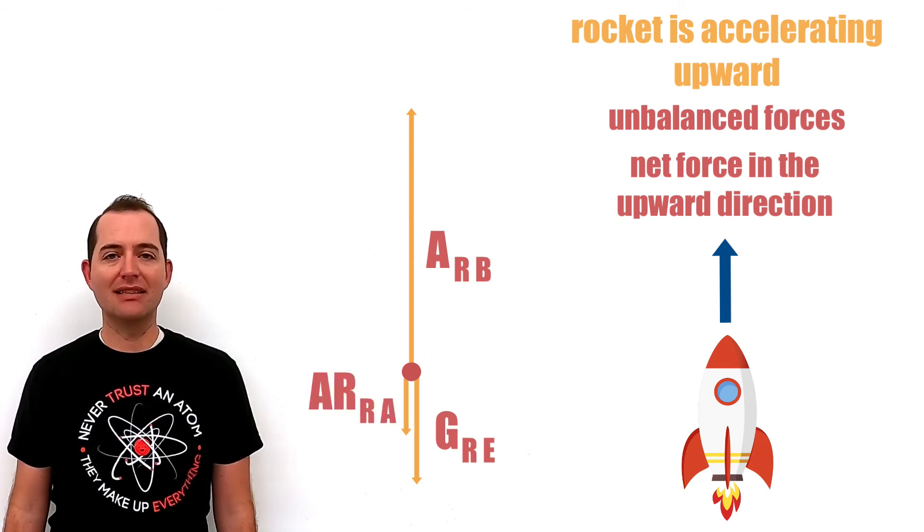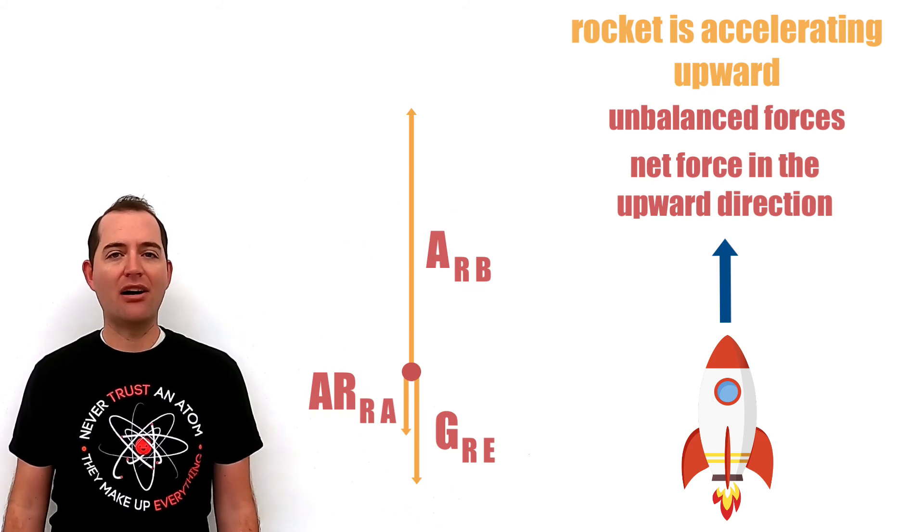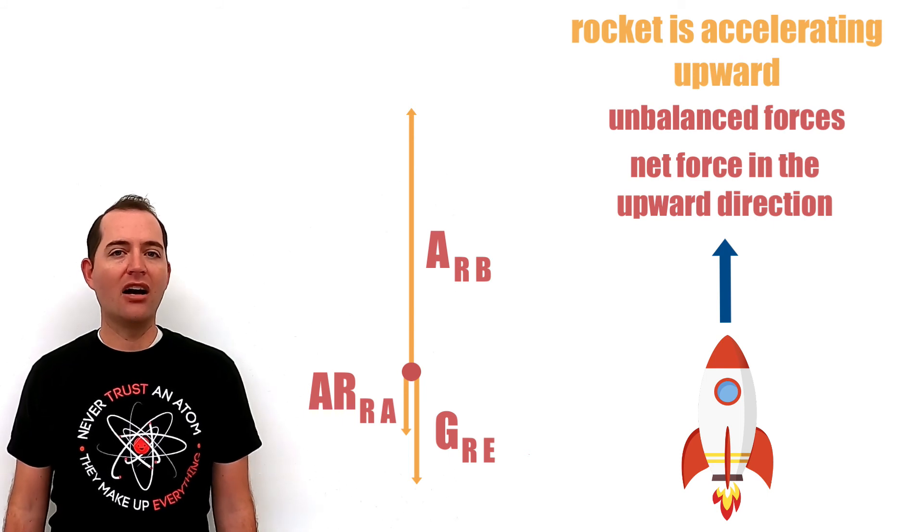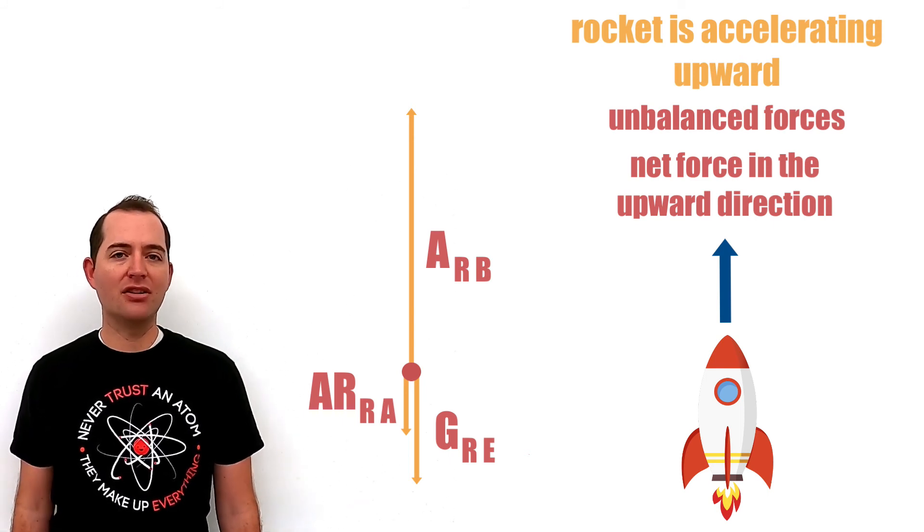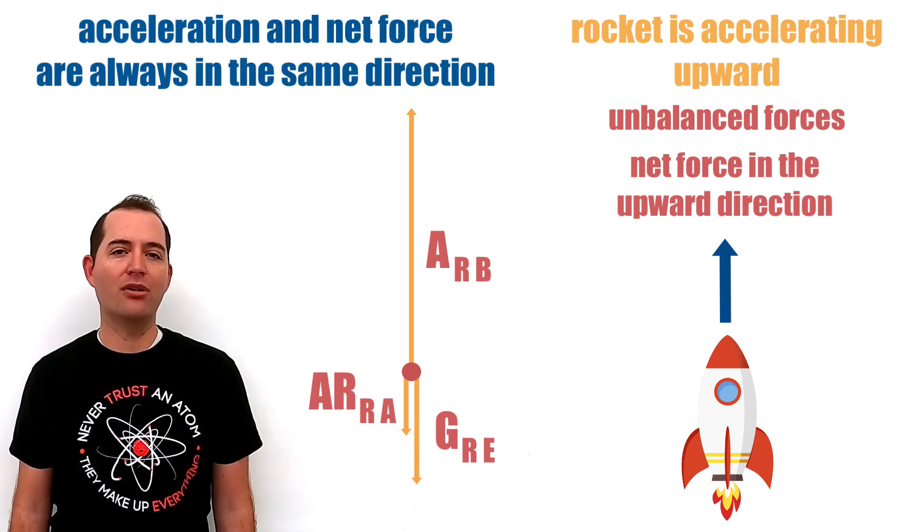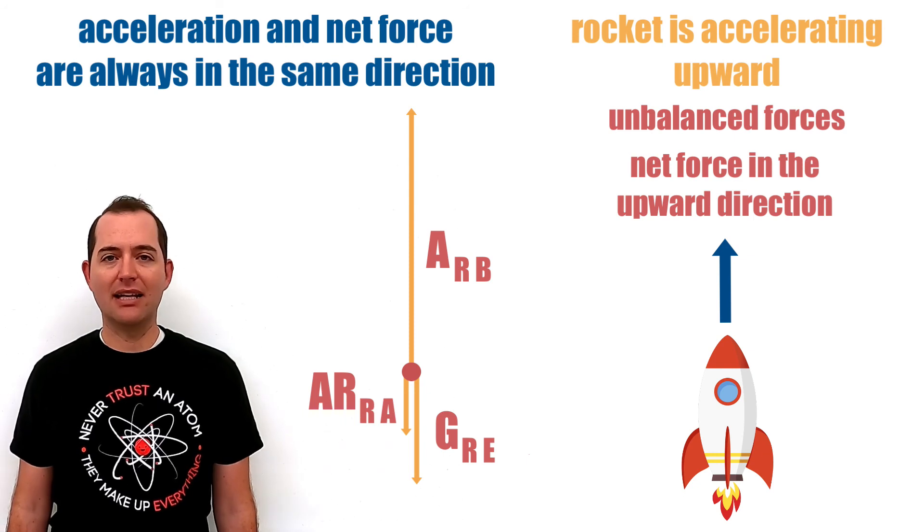And finally, we have air resistance acting on the rocket by the air. This is in the downward direction. Because of the accelerated motion of the rocket, our free body diagram must show a net force in the upward direction. This is because acceleration and net force are always in the same direction.